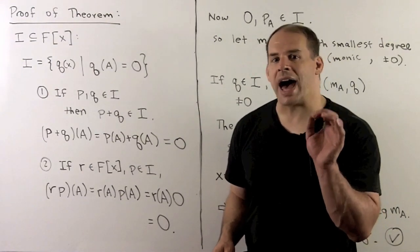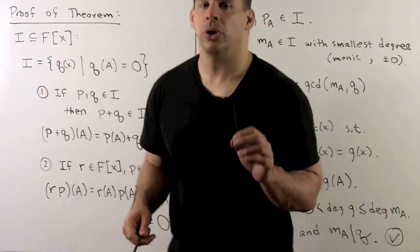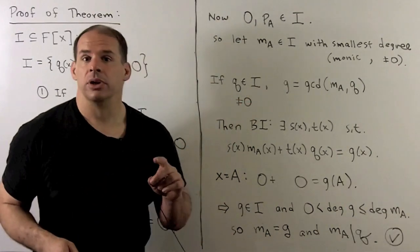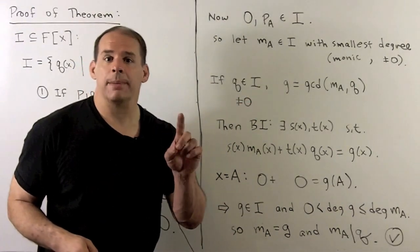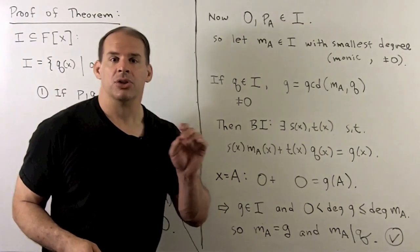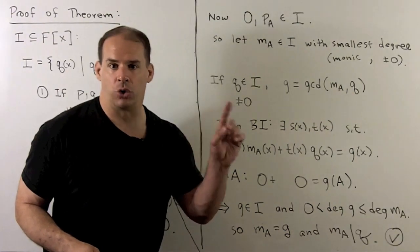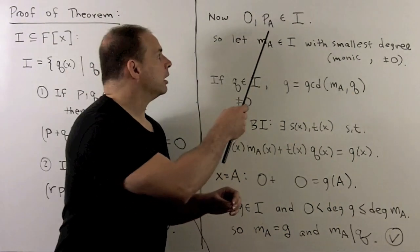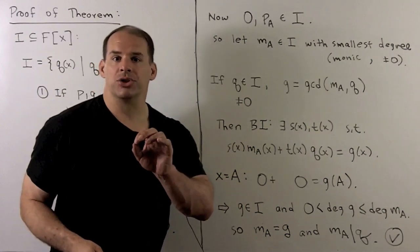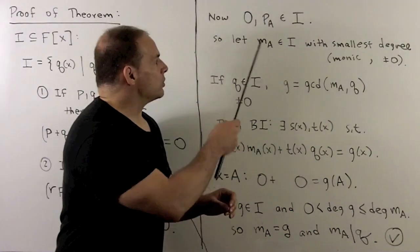Now, we're going to use I to find our minimal polynomial. First, we note I is non-empty. So zero will be in I, but we also have that the characteristic polynomial of A is in I. So that means we have at least one monic polynomial which has positive degree. Now, because of that, there exists monic polynomials of smallest positive degree. So let's call one of those M_A.